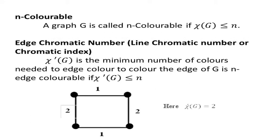The next definition is n-colorable. A graph G is called n-colorable if the chromatic number of the graph is less than or equal to n. So we can say the cycle C4 is 4-colorable, or 3-colorable, or 2-colorable.